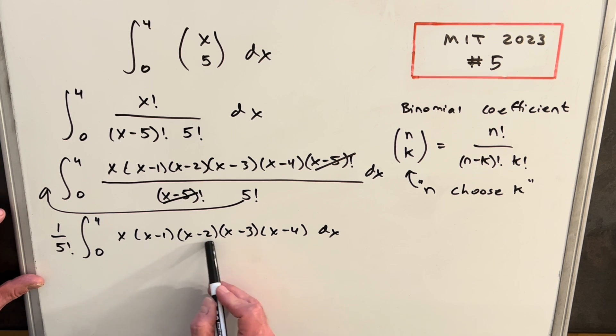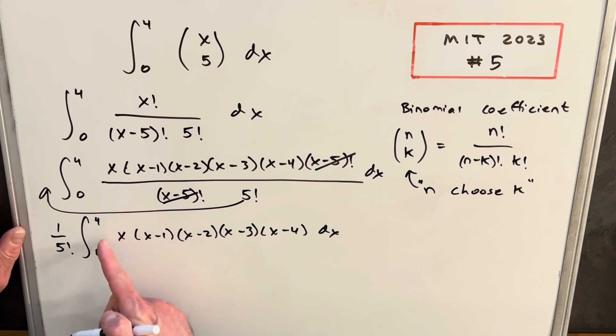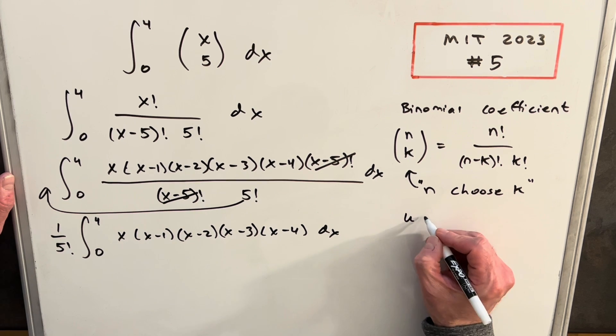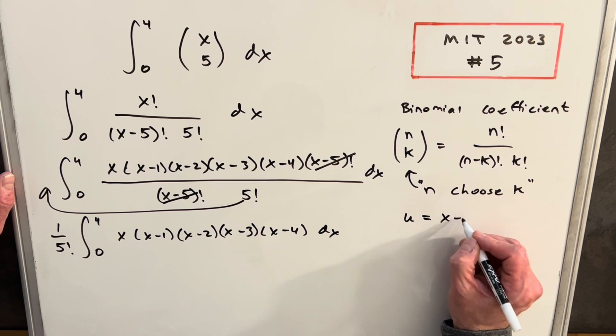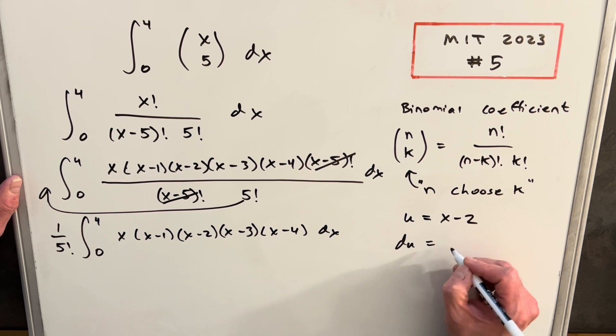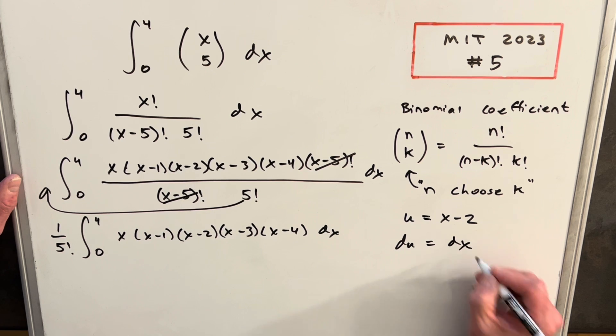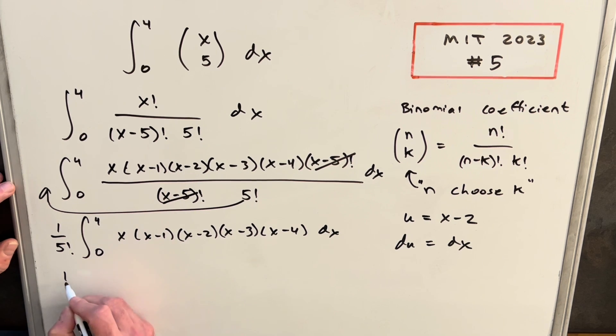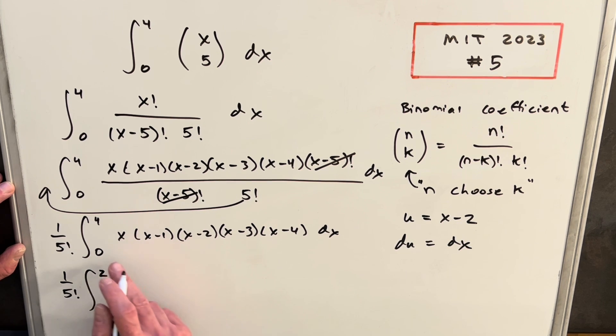What I'm going to do is I'm going to use this middle term for my u. I think that's going to be ideal. I think it's also going to help with the balance. So I'm going to say u equals x minus two. And then du is going to be just equal to dx. And then we'll make the substitution. So we're going to have one over five factorial. Then plugging a four in here, we're going to have two for our upper bound. Plugging a zero in, we're going to have a minus two.